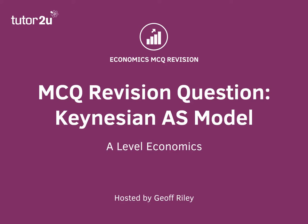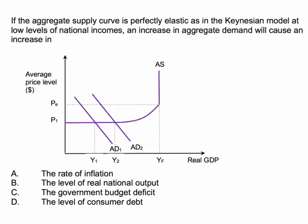Let's take a look at a question on the Keynesian aggregate supply curve and the interaction with aggregate demand. If the aggregate supply curve is perfectly elastic, as in the Keynesian model at low levels of national income, an increase in aggregate demand will cause an increase in what — A, B, C, or D? Press the pause button, have a think about the question, and then we'll come back with the right answer.